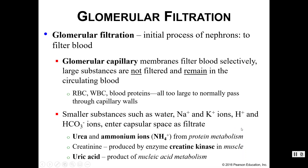Glomerular filtration is where we filter the blood at the glomerulus. The glomerular capillaries are very leaky — they're fenestrated — but the podocytes create the filtration slits, so we're pretty selective about what can be filtered out of the blood and make its way into Bowman's capsule. Large substances are not filtered and remain in the blood: red blood cells, white blood cells, blood proteins like antibodies and albumin. Usually those are too big to pass through the capillary walls.